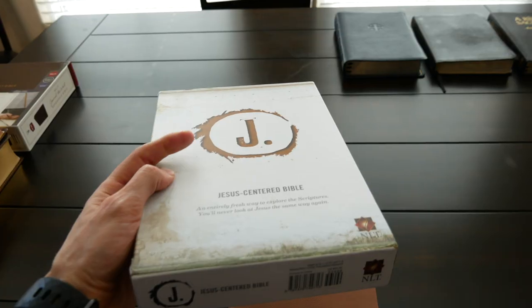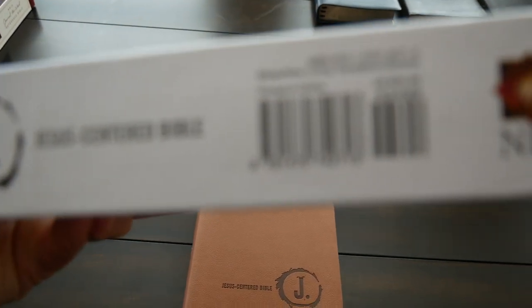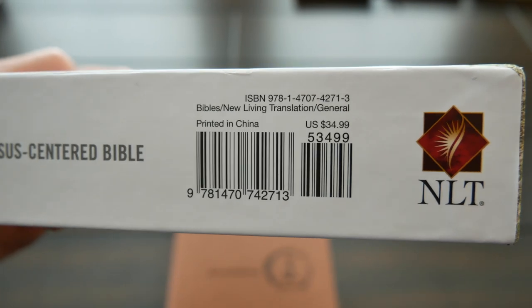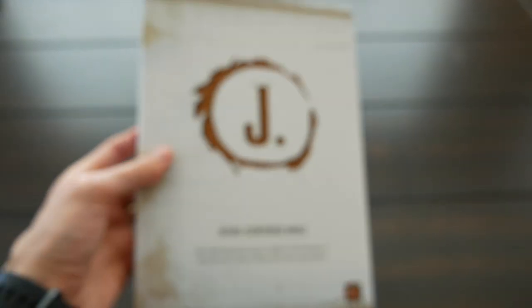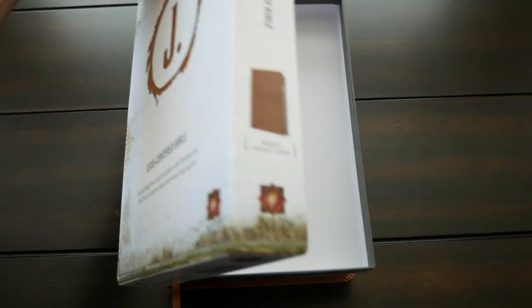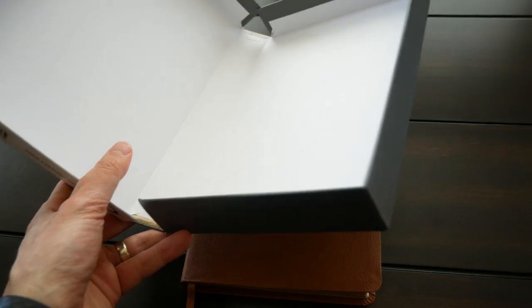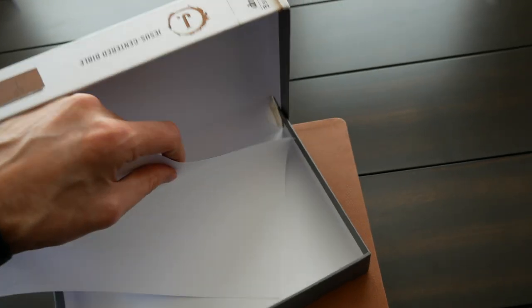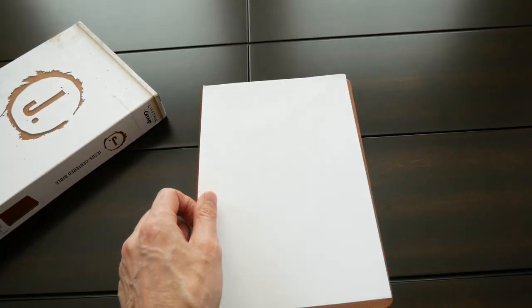Jesus-centered Bible. And it retails for $34.99, but you can buy it on Amazon for around 20 bucks. The box opens to the side like this. It's a clamshell box and inside it is white. Actually, it came with this really cool white paper just to protect the cover.